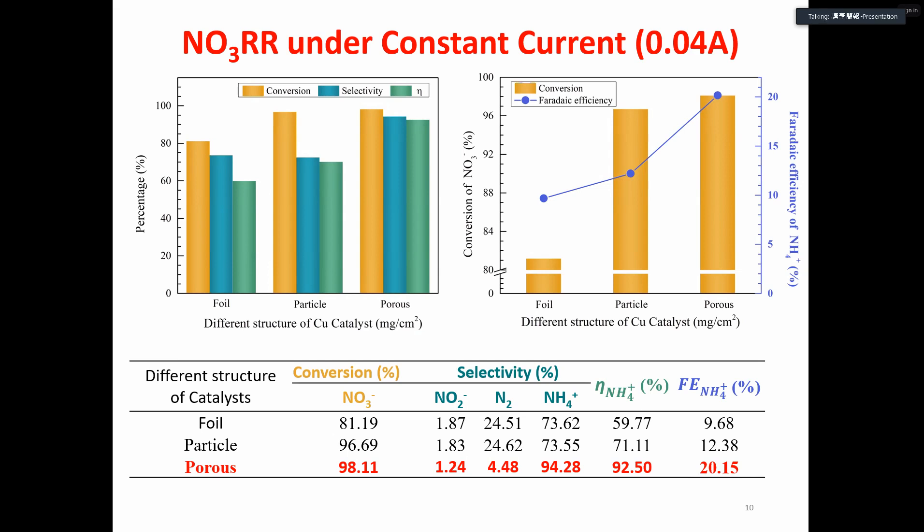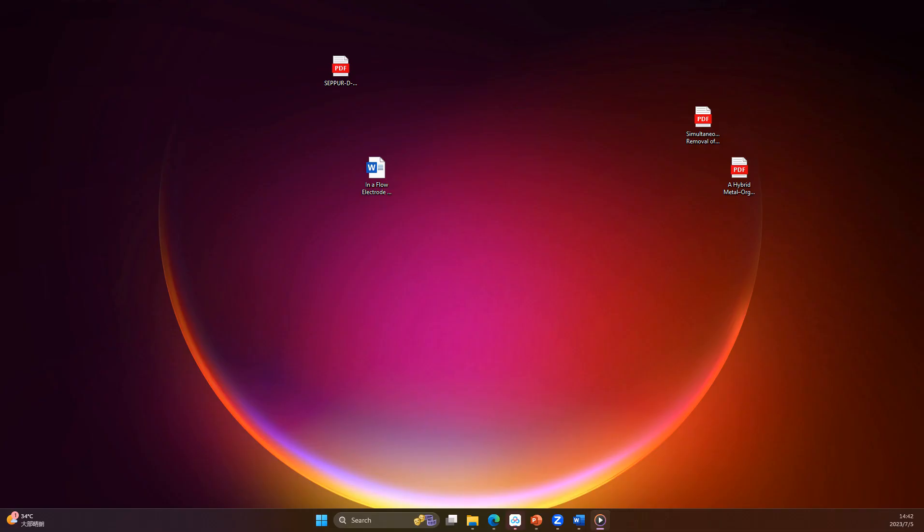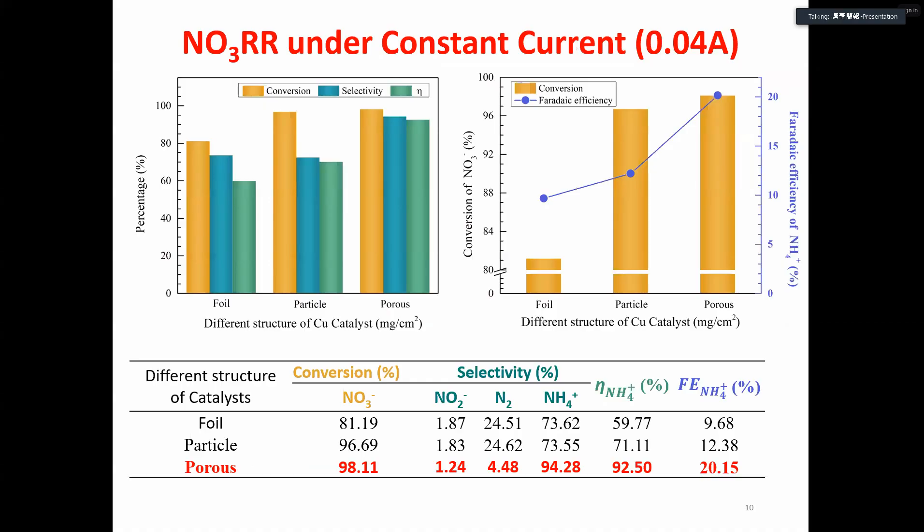From the table, we can see that the copper porous catalyst outperforms the copper particle and copper foil in all terms. The final nitrate conversion can reach around 98%, and the ammonium yield can reach around 93% with Faraday efficiency of 20%. It is clear that we have remarkable nitrate conversion and ammonia yield, but the Faraday efficiency is unacceptable.